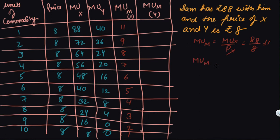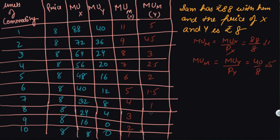To calculate MU_m for commodity Y, we compute MU_y divided by price of Y. For example, 40 divided by 8 gives 5. Continuing the calculation, the MU_m values for Y are: 5, 4.5, 3, 2.5, 2, 1.5, 1, 0 — and beyond that, MU_y is zero or negative.